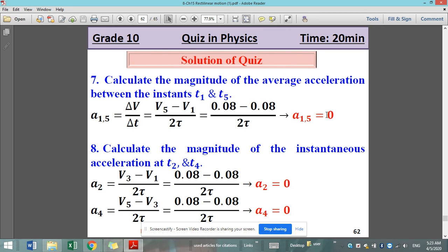So calculate the magnitude of the instantaneous acceleration at T2 and T4. For instantaneous acceleration, we have to choose the speed just after the instant and the one just before to see at what rate did it change. V3 minus V1 over 2 tau. Also, we obtain 0. A4, V5 minus V3, also we obtain A4 equal to 0. So average acceleration and instantaneous accelerations are both equal to 0 in URM.